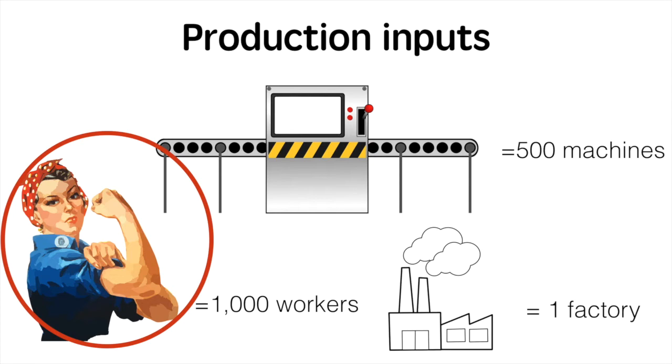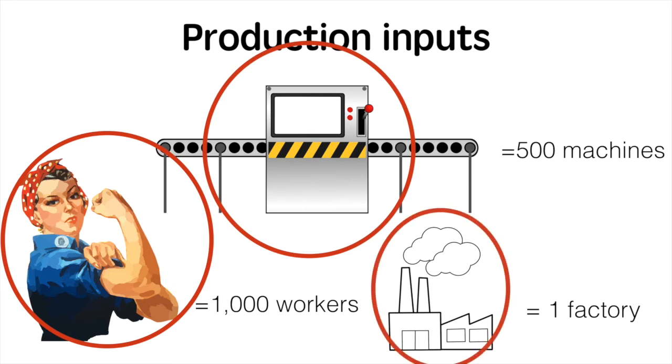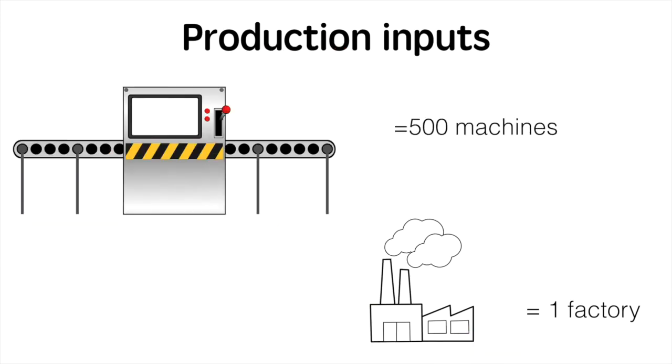In the long run the quantity of all factors of production is variable. Specifically, the difference between the short run and long run is the ability to vary capital. The long run cost function is therefore based on the assumption that all factors of production are variable.